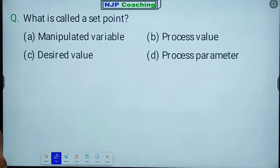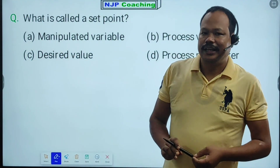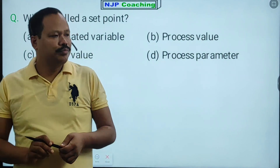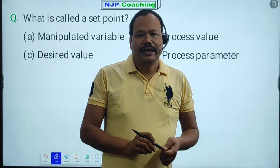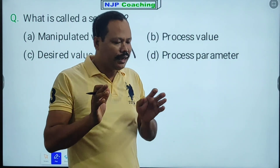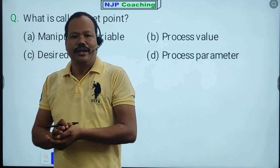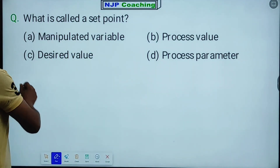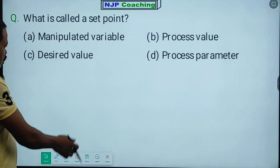That is a short question. What is called a set point? The options are: manipulated variable, process value, desired value, process parameter. Set point means set value — desired value. Set point equals desired value.